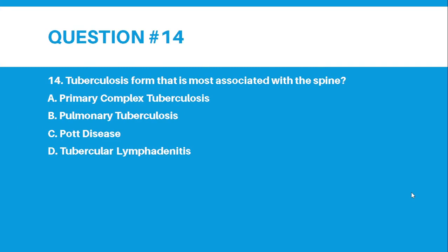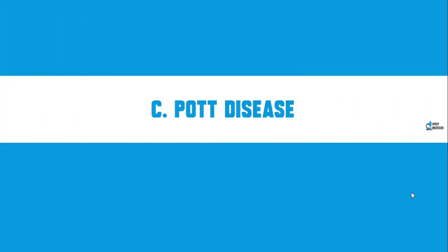Number 14. Tuberculosis form that is most associated with the spine. Letter A, Primary Complex Tuberculosis. Letter B, Pulmonary Tuberculosis. Letter C, Pott's Disease. Letter D, Tubercular Lymphadenitis. And the correct answer for number 14 is letter C, Pott's Disease.